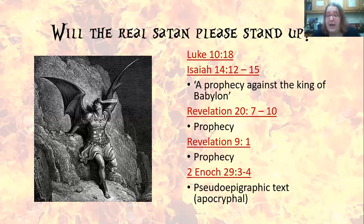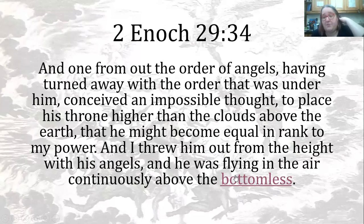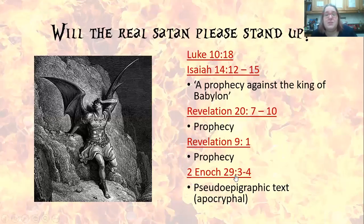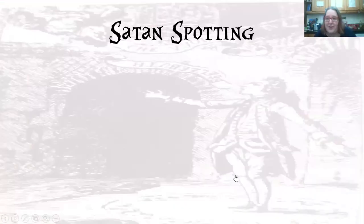The clearest and most coherent story we have is found in 2 Enoch 29:3–4, where we're told that out of the order of angels he turned away, conceived an impossible thought to place his throne higher than the clouds, that he might become equal in rank to God's power, and was thrown out from the height with his angels. The problem is that 2 Enoch is a pseudoepigraphic and apocryphal text. So within the Bible we don't have a clear satanic narrative, which leaves a lot of wiggle room for literary writers to work with — and you certainly find this in the Gothic.